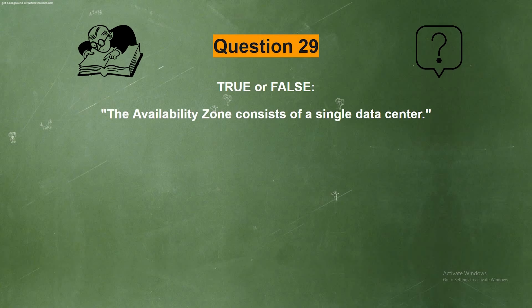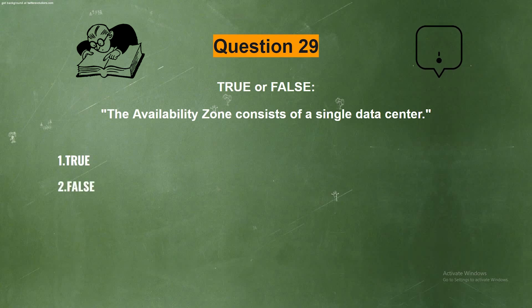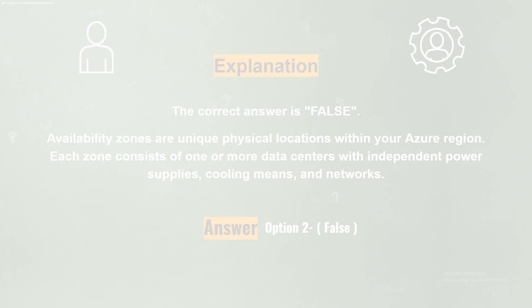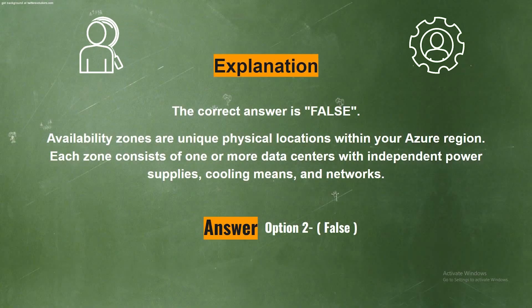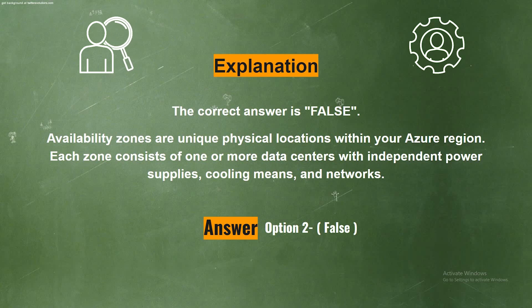Question 29. True or False? The Availability Zone consists of a single data center. The correct answer is Option 2, False. Availability Zones are unique physical locations within your Azure region. Each zone consists of one or more data centers with independent power supplies, cooling, and networks.